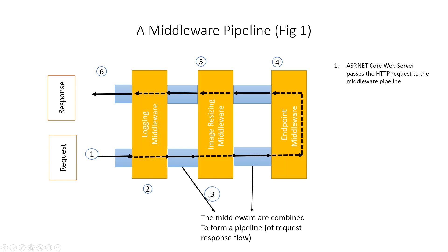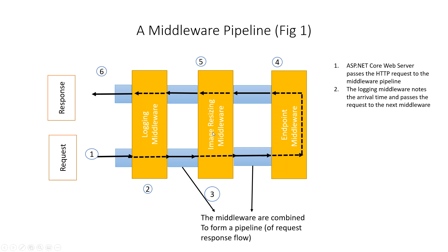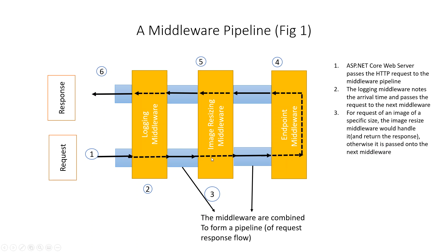In figure one, a request arrives at point one and is received by the logging middleware, passed by the ASP.NET Core server to the request pipeline. The logging middleware notes the arrival time and passes the request to the next middleware — the image resizing middleware. For a request for an image of a specific size, the image resize middleware handles the request and returns the response; otherwise it passes the request to the next middleware.